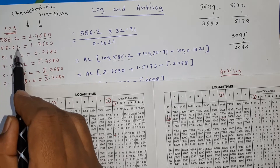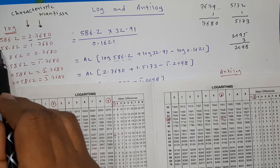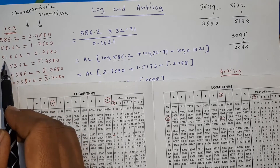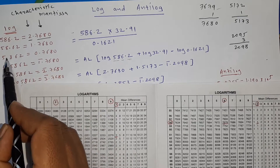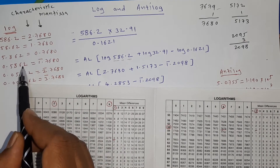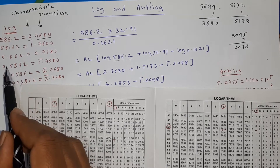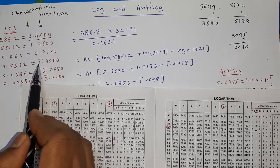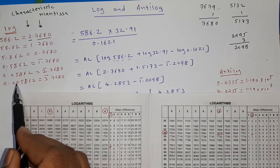If the number is 5862 (decimal at end), the mantissa is still 7680 but there are two digits before the decimal, so 2 − 1 = 1, giving 1.7680. If the number is 0.5862, there is one digit before the decimal (the 0), so 1 − 1 = 0, giving 0.7680. If the number is 0.5862 with a zero before decimal giving 0 digits, then 0 − 1 = −1, written as bar 1.